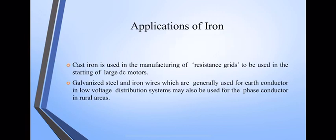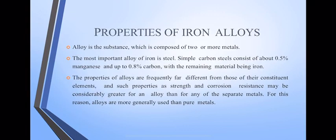Alloy is a substance which is composed of two or more metals. The most important alloy of iron is steel. Simple carbon steel consists of about 0.5% manganese and up to 0.8% carbon, with the remaining material being iron. If we use alloys instead of pure metals, it changes the properties, such as strength and corrosion resistance.